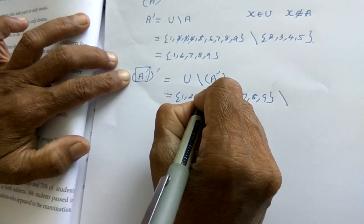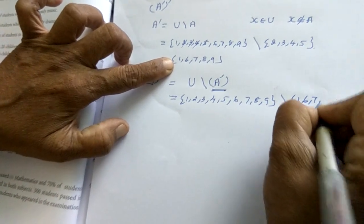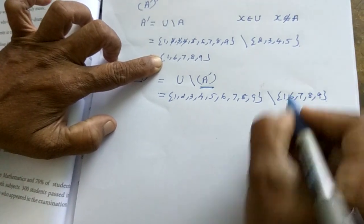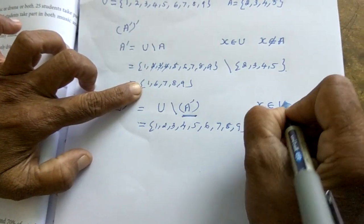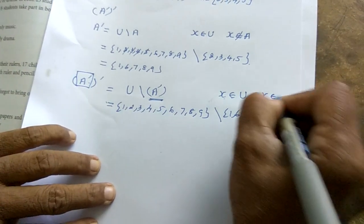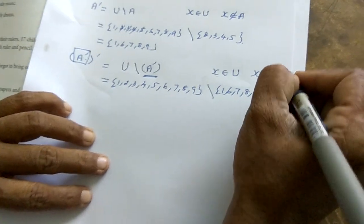Difference, what is A dash? 1, 6, 7, 8, 9. Here what is the condition? X belongs to U. X is an element of U. X is not an element of A dash.